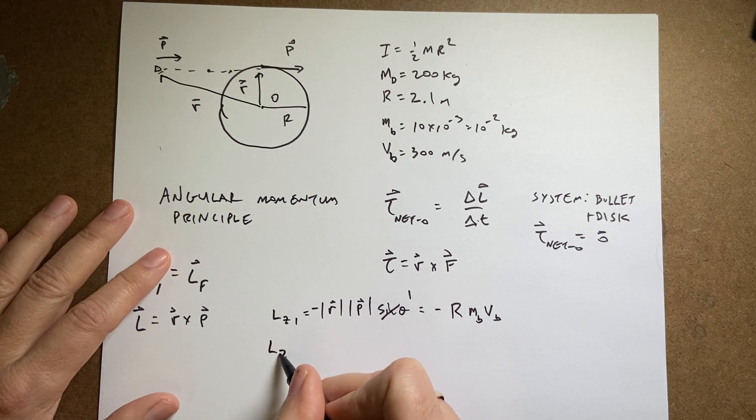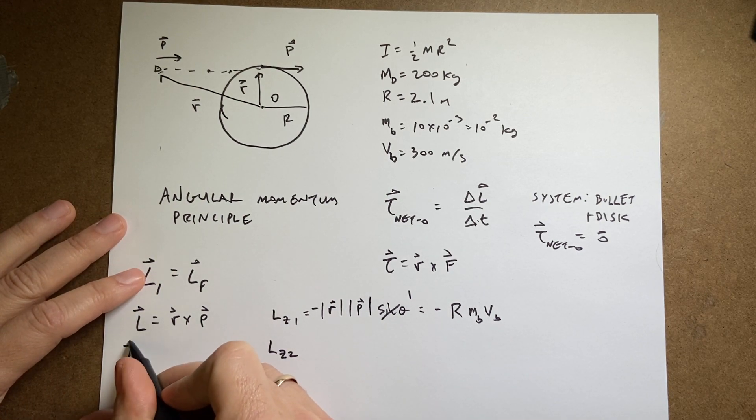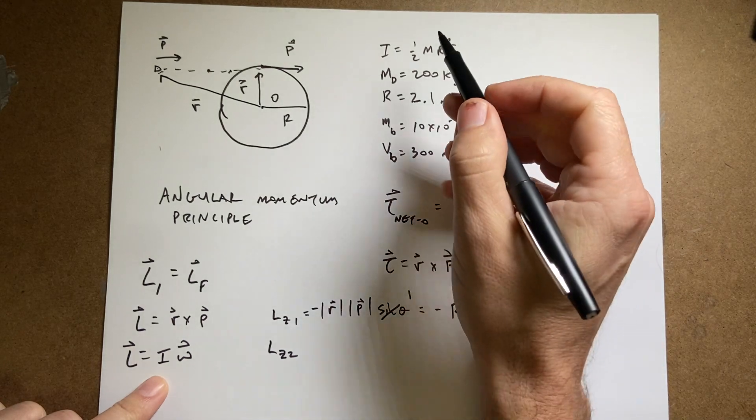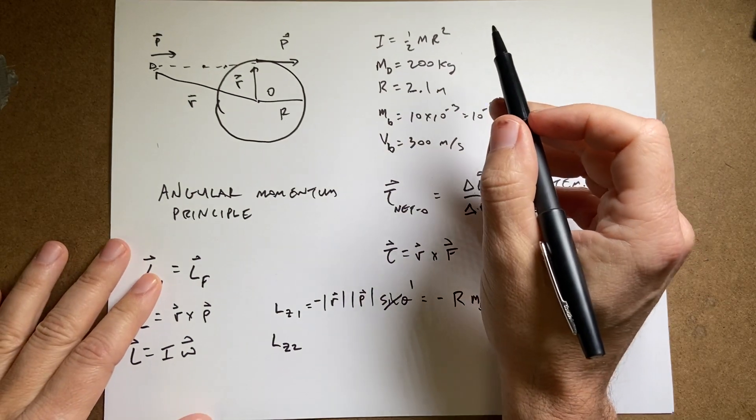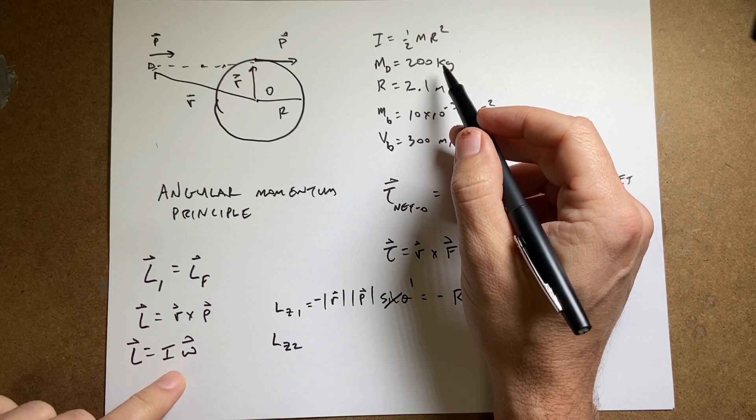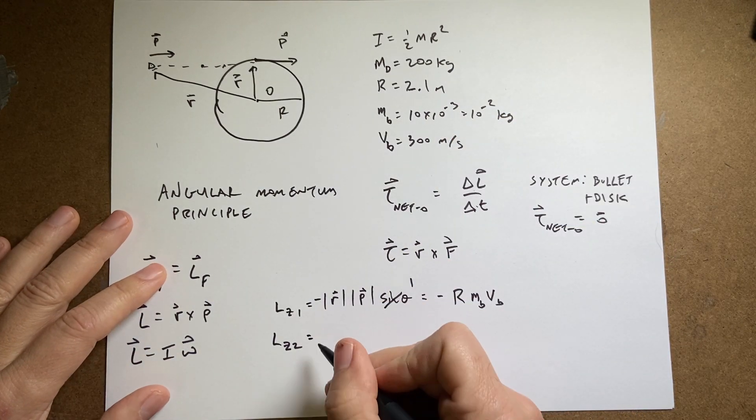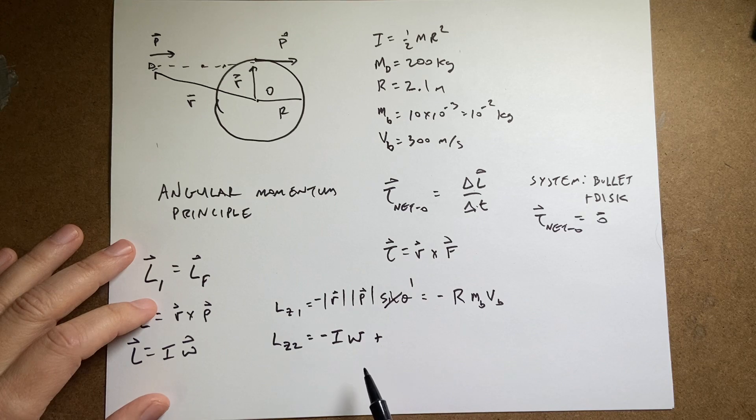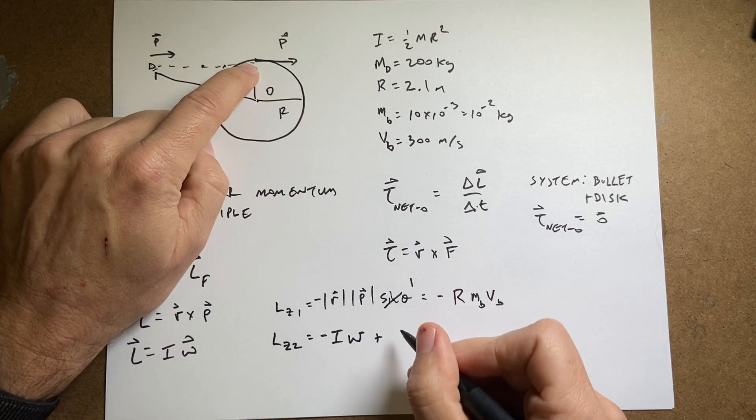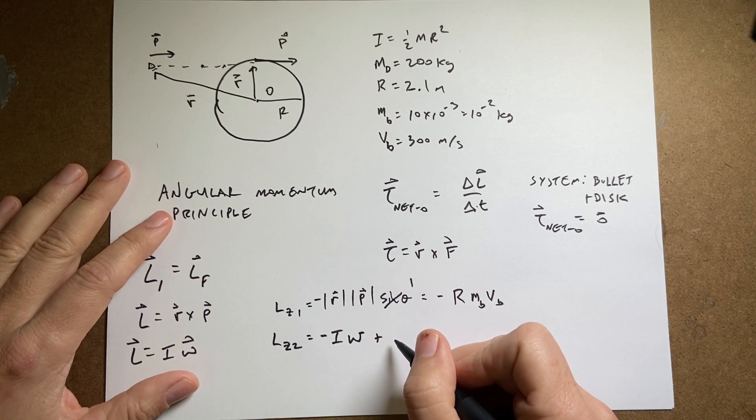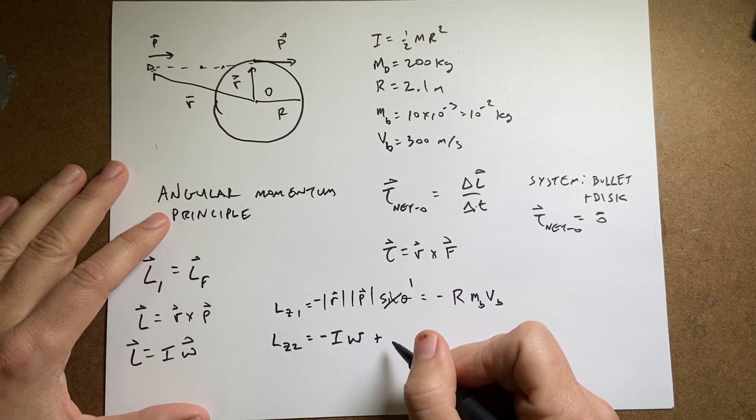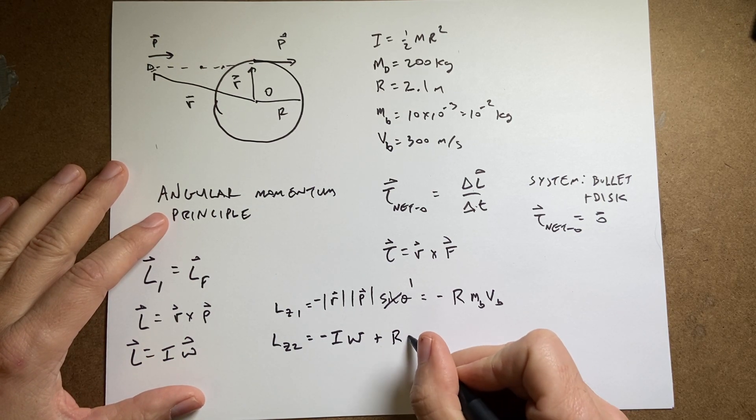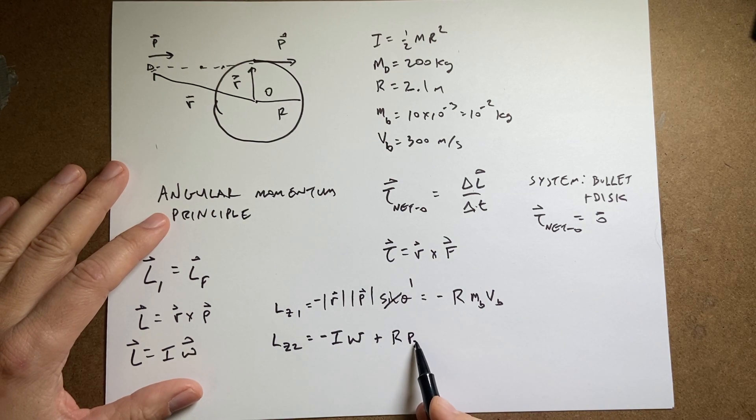After the collision, Lz2, I use the other definition of angular momentum: I omega, where I is the moment of inertia and omega is the angular velocity—that's what I want to find. In the z direction this is negative I omega. Now I still have the bullet rotating, so I include that: r p2, where p2 is the final momentum. That equals negative I omega minus r times mass of bullet times velocity. But the bullet's stuck on the merry-go-round, so v equals omega r for a rotating object. So I put in omega r.